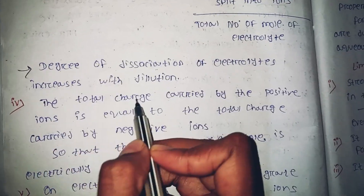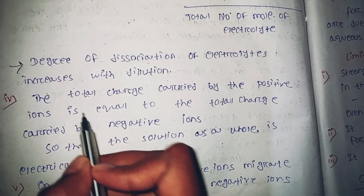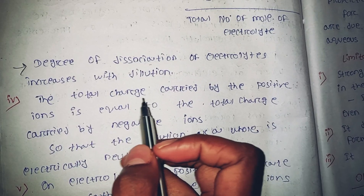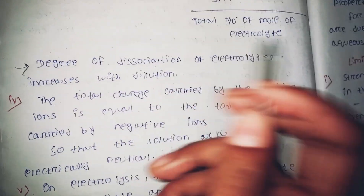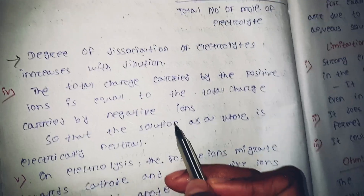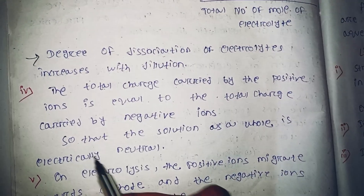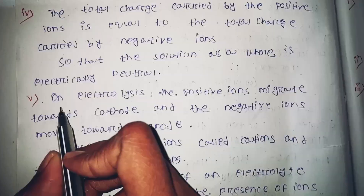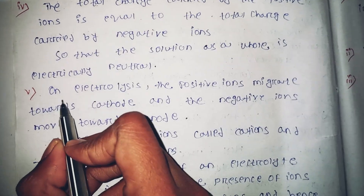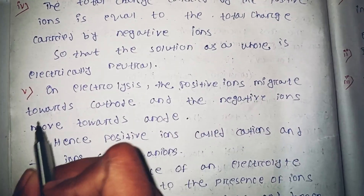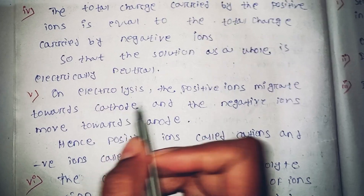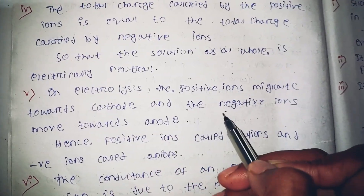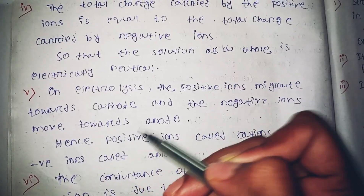The total charge carried by the positive ions is equal to the total charge carried by the negative ions. The positive ions migrate towards the cathode and the negative ions move towards the anode.